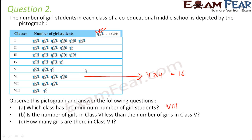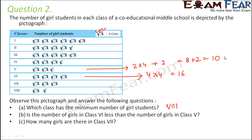What about class 5? In class 5, how many pictures do you have? Two and a half. So two full pictures: two into four, plus one half picture. Half means half of four, so just two. So this would be eight plus two, that is 10. So there are 10 students in class 5 and 16 students in class 6. Therefore, the number of girls in class 6 is more than the number of girls in class 5. So is class 6 less than class 5? No — instead it is greater.